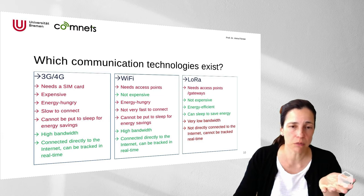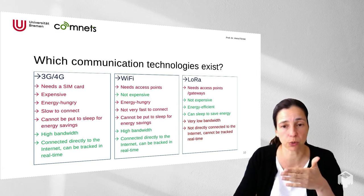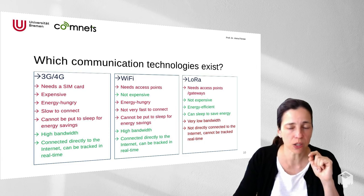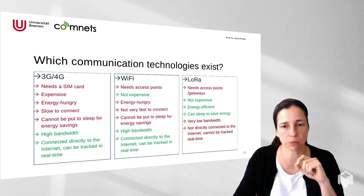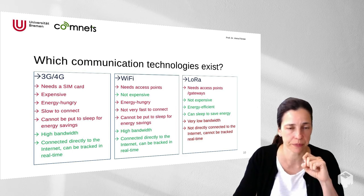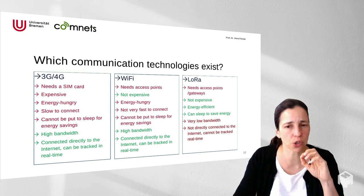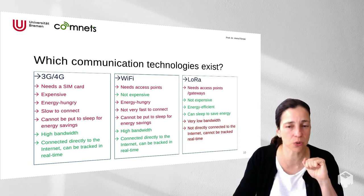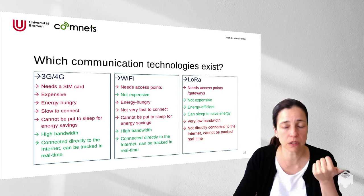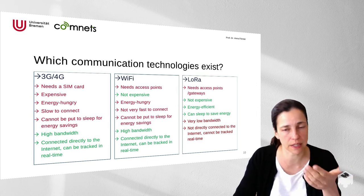With Wi-Fi you don't need a SIM card, but you do need access points — you need to find a connection you're allowed to use. It is not very expensive; a Wi-Fi component is relatively cheap and comes built into many IoT devices. However, it is still quite energy-hungry, similar to 3G or 4G, and it's not very fast to reconnect — though faster than 3G/4G — which still makes it a less-than-ideal option for sleep-based energy saving. On the positive side, it has very high bandwidth, good for lots of data, and it is connected directly to the cloud, allowing real-time tracking.